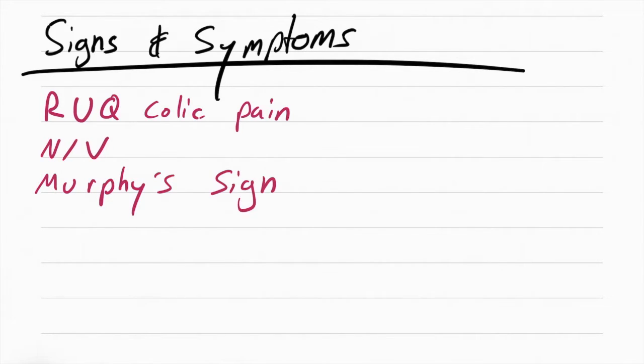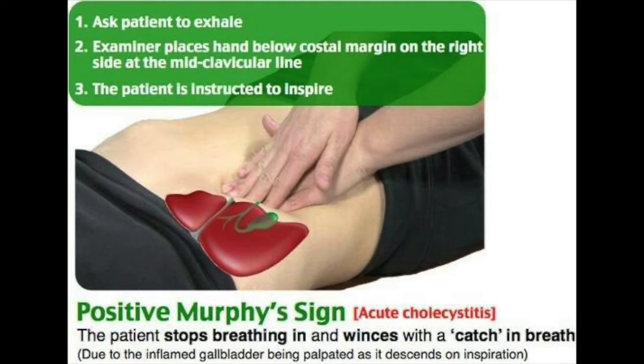The patient can also have something called Murphy sign. This is when you ask the patient to exhale, you press on the right upper quadrant, and then as they inhale, their gallbladder and liver come down and touch your hand, causing pain. This is known as a positive Murphy sign.